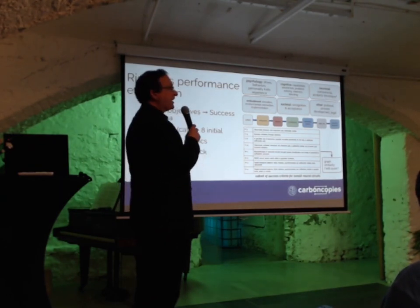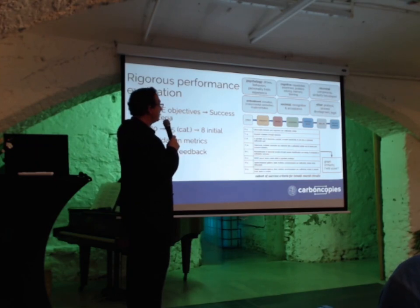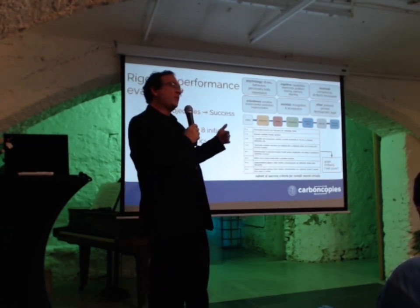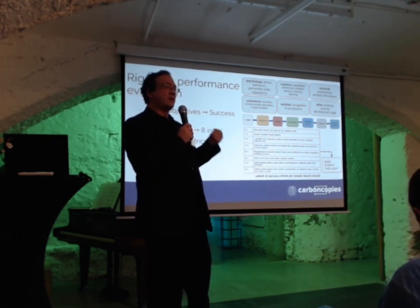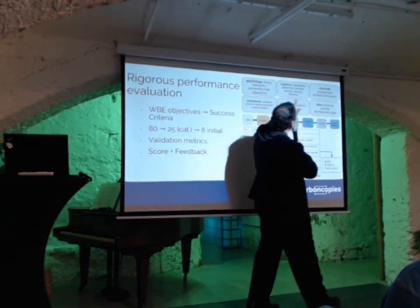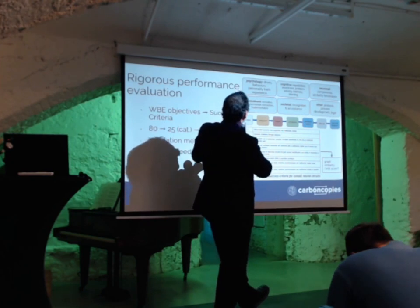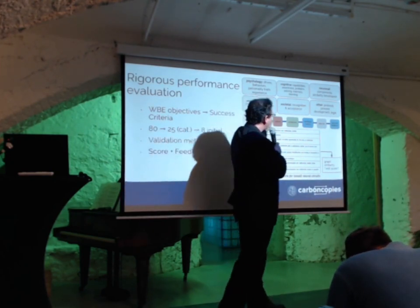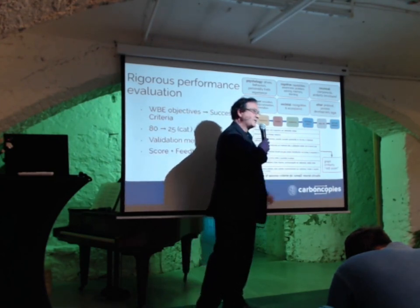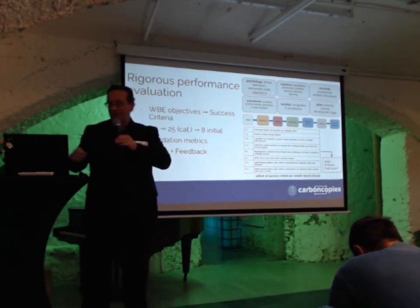This is based on setting up some validation metrics, and the validation metrics are based on success criteria that aim at the objectives of brain emulation. To come up with these objectives, we carried out three different events where we asked participants to come up with all the things they thought were important for a working brain emulation. It ended up having several categories: psychological ones like drives, behaviors, and personality traits; cognitive ones like capabilities, awareness, problem-solving, and memory; neuronal ones like the components themselves and similarities in their function; and embodiment and so forth. We collected all of that and ended up working towards getting validation metrics. We found a subset of eight of them that we can apply to these small neural circuits — not whole brains, because some of the stuff about embodiment didn't really play a role here.